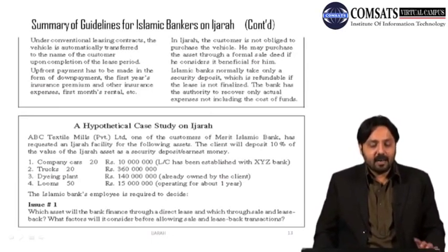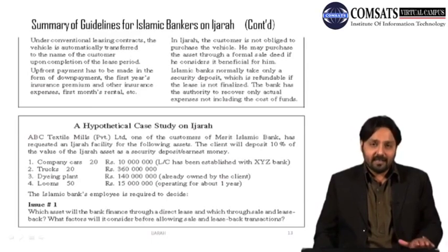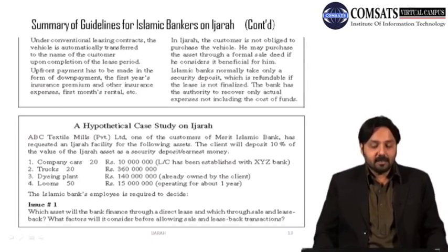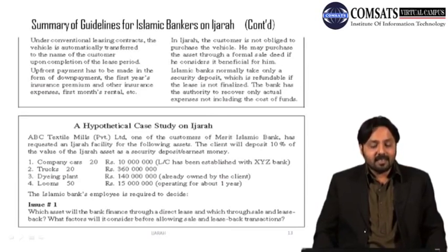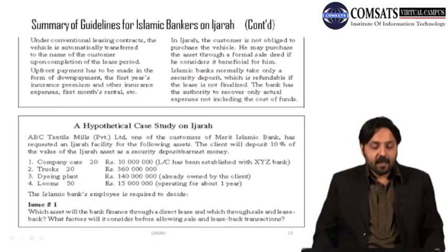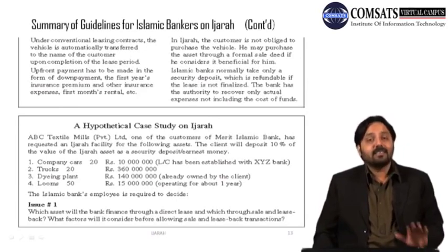The client will deposit 10% of the value of the Ijara asset as a security deposit or earnest money. The assets required are: company cars — 20 units costing Rs. 10 million, with a letter of credit established with XYZ Bank; trucks — 20 units costing Rs. 360 million; a dying plant costing Rs. 140 million, already owned by the client; and looms — 50 units costing Rs. 15 million, operating for about one year.